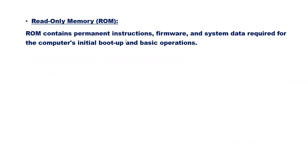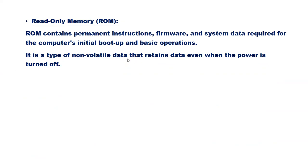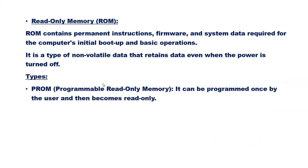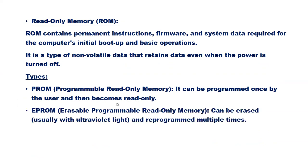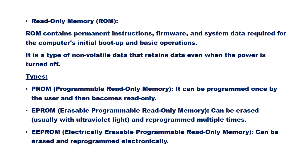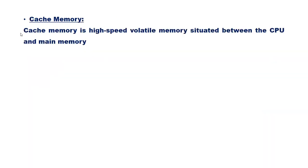Read-only memory (ROM) contains permanent instructions, firmware, and system data required for the computer's initial boot-up and basic operations. It is non-volatile, retaining data even when power is turned off. Types of ROM include PROM (Programmable Read-only Memory), which can be programmed once by the user; EPROM (Erasable Programmable Read-only Memory), which can be erased — usually with ultraviolet light — and reprogrammed multiple times; and EEPROM (Electrically Erasable Programmable Read-only Memory), which can be erased and reprogrammed electronically.